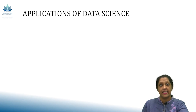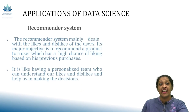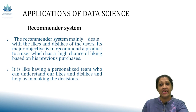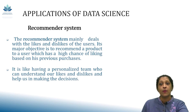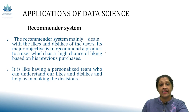Now, let us understand data science applications in detail. The first one is the recommended system. A recommended system mainly deals with the likes and dislikes of the user. Its major objective is to recommend a product to a user which has a high chance of being liked based on their previous purchases. It is like having a personalized team who can understand our likes and dislikes and help us in making decisions.